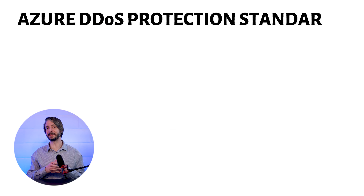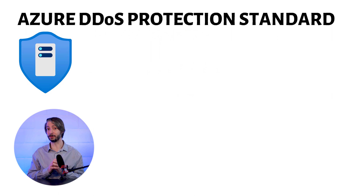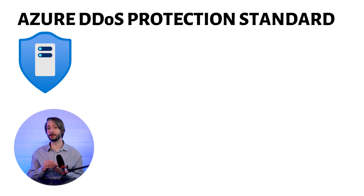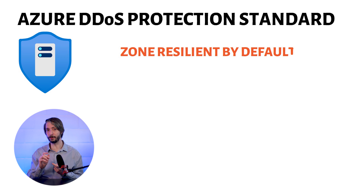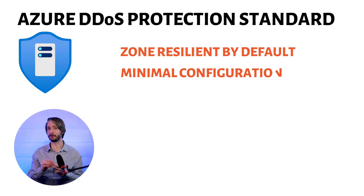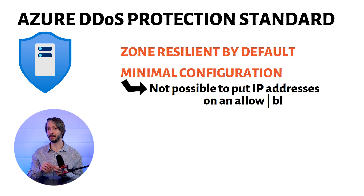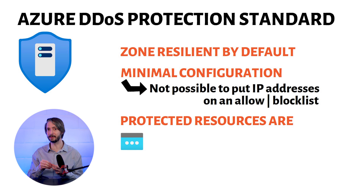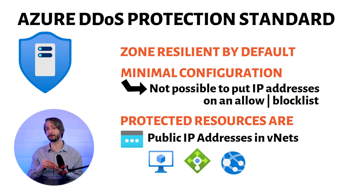Before we end, let's note some important considerations. Azure DDoS Protection Standard is zone resilient by default — no configuration is necessary for this. There is only minimal configuration available; for example, it is not possible to put IP addresses on a whitelist or deny list. The protected instances include public IP addresses for VNets, VMs, load balancers, application gateways, firewalls, bastion, and VPN gateways.